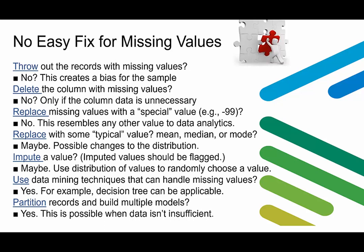Another solution is to use data mining techniques to handle missing values — for example, decision trees can be applicable. If the postcode starts with M, it's likely the city is Manchester. We can also partition records and build models. Additionally, we can introduce another dataset containing the missing information, but be careful as this may create new missing values.